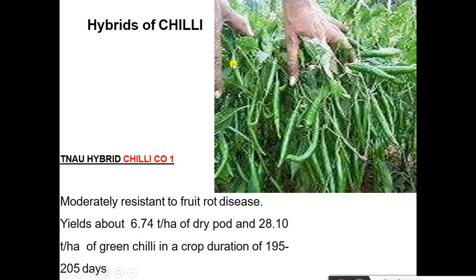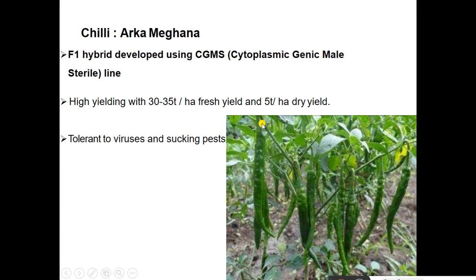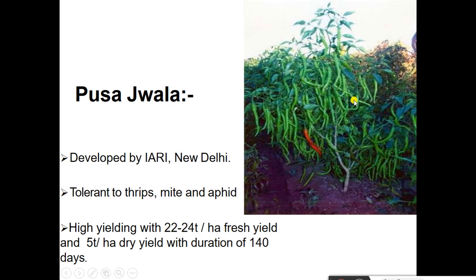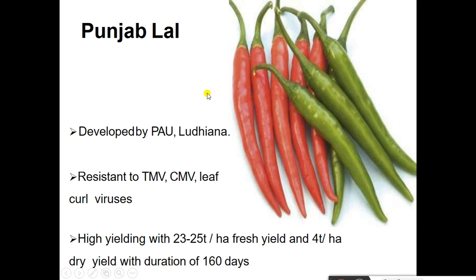Then a hybrid chili CO1 developed by Tamil Nadu Agricultural University — see the image of hybrid CO1. Then Arka Meghna — see the image of Arka Meghna cultivar; it is an F1 hybrid developed using cytoplasmic genetic male sterility. Then Pusa Jwala, developed by IARI New Delhi — yield is 22 to 24 tons per hectare. Then Punjab Lal, developed by Ludhiana. Thank you for watching this video.